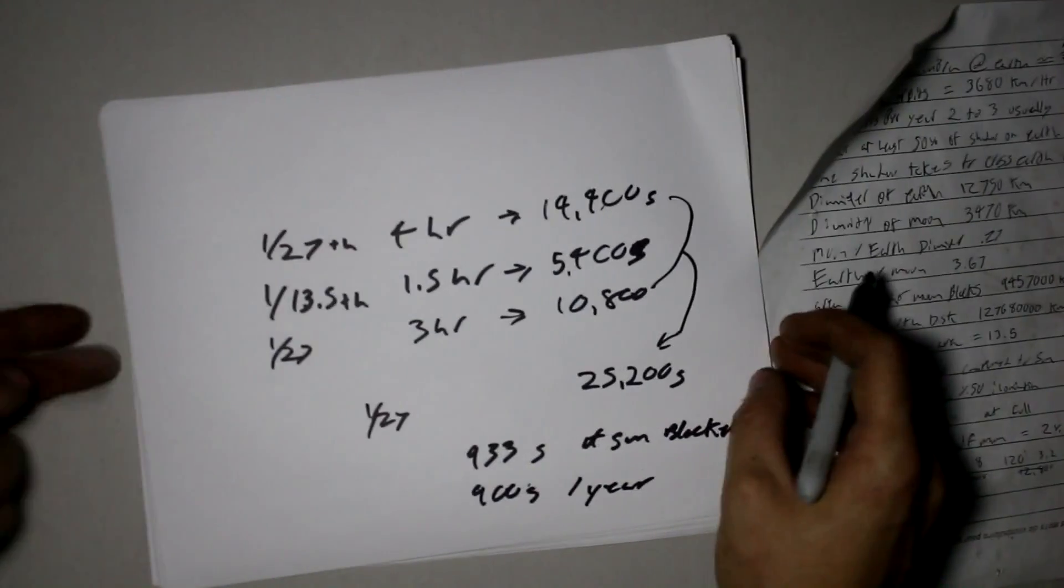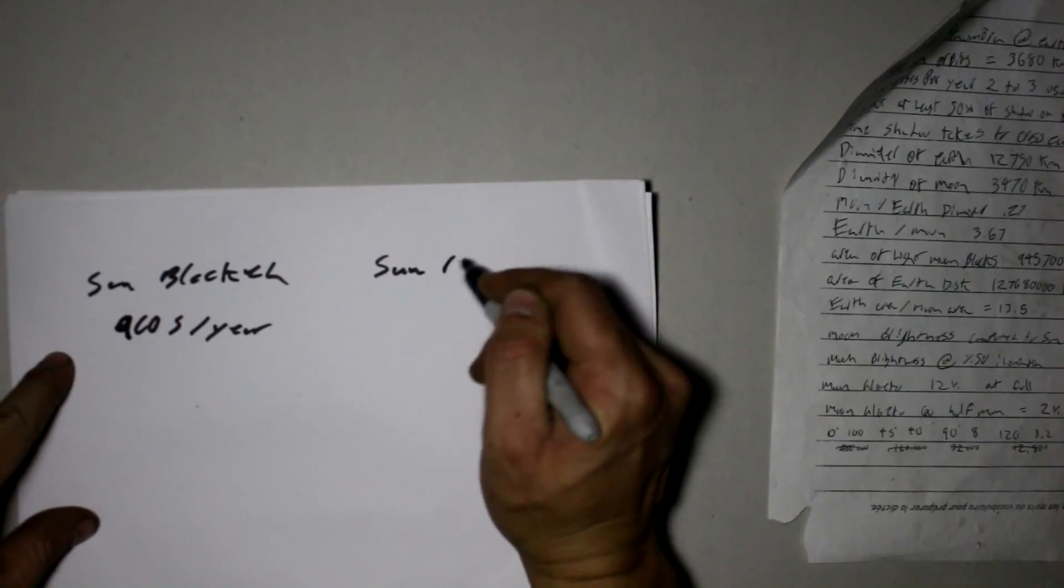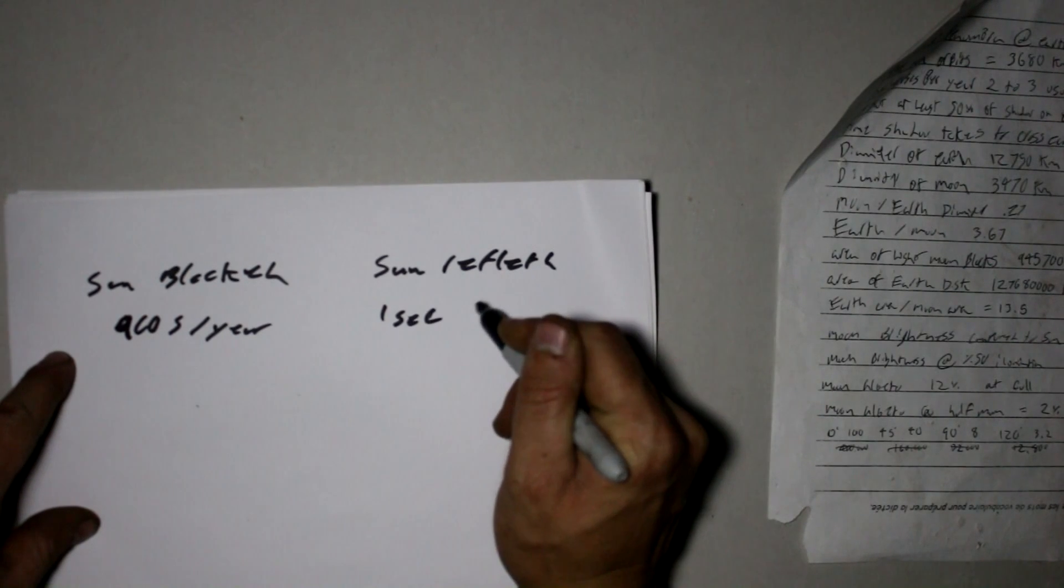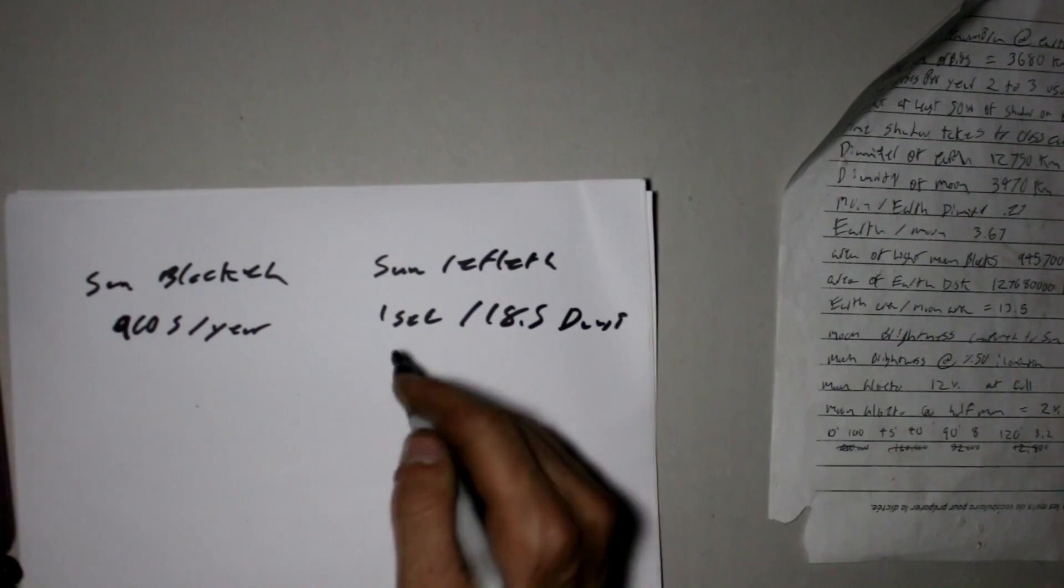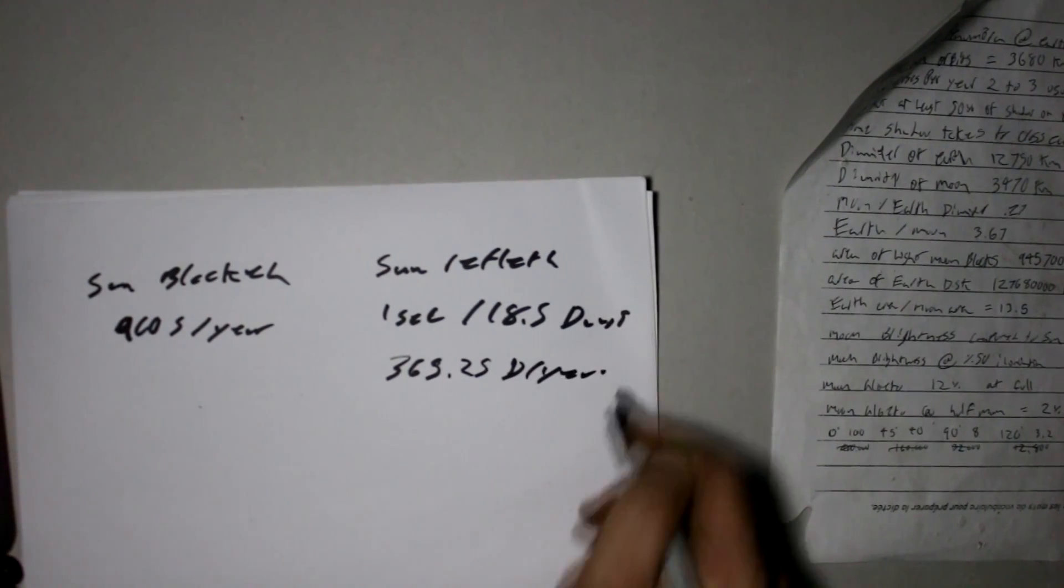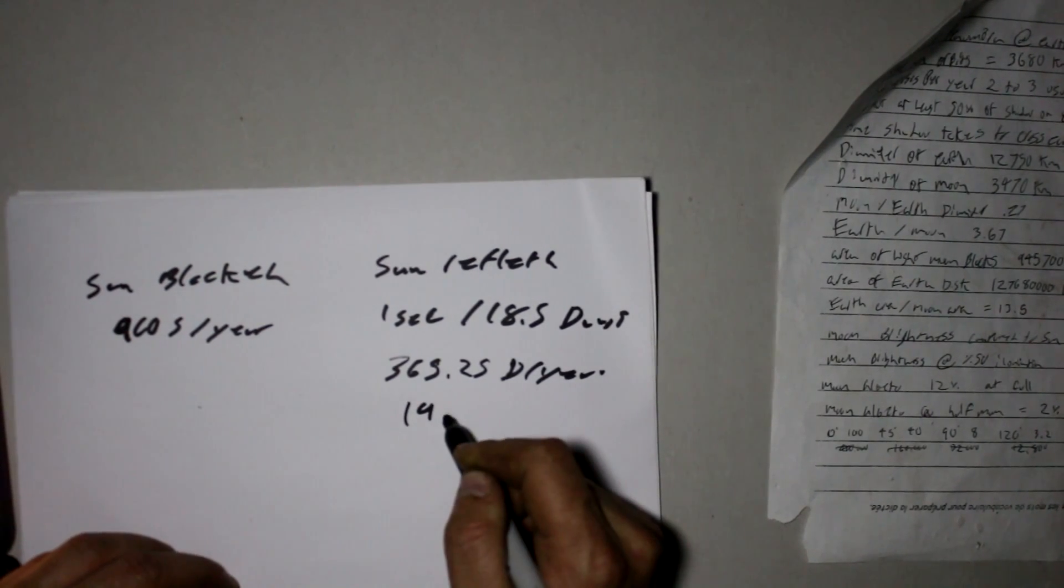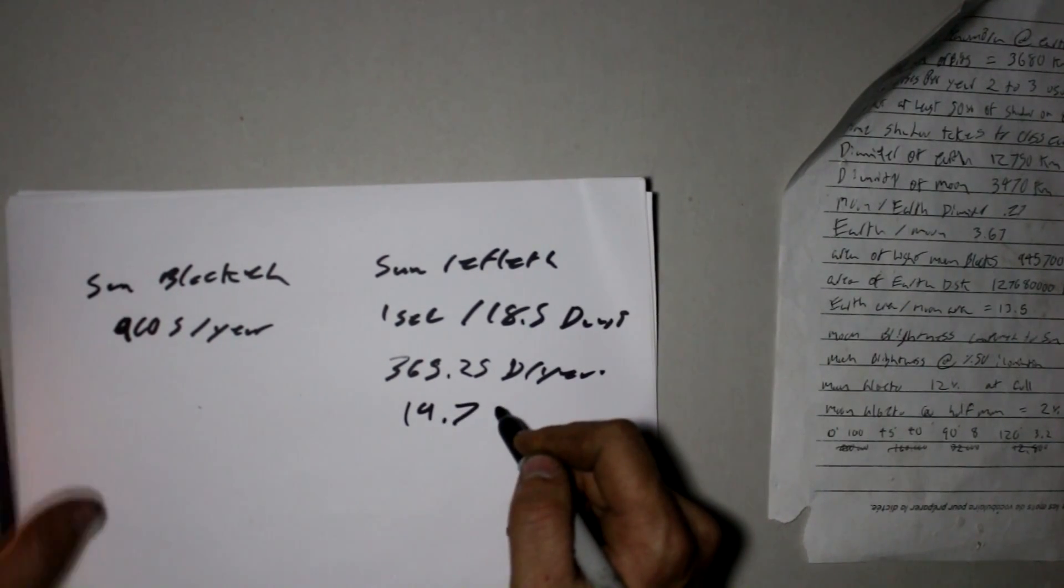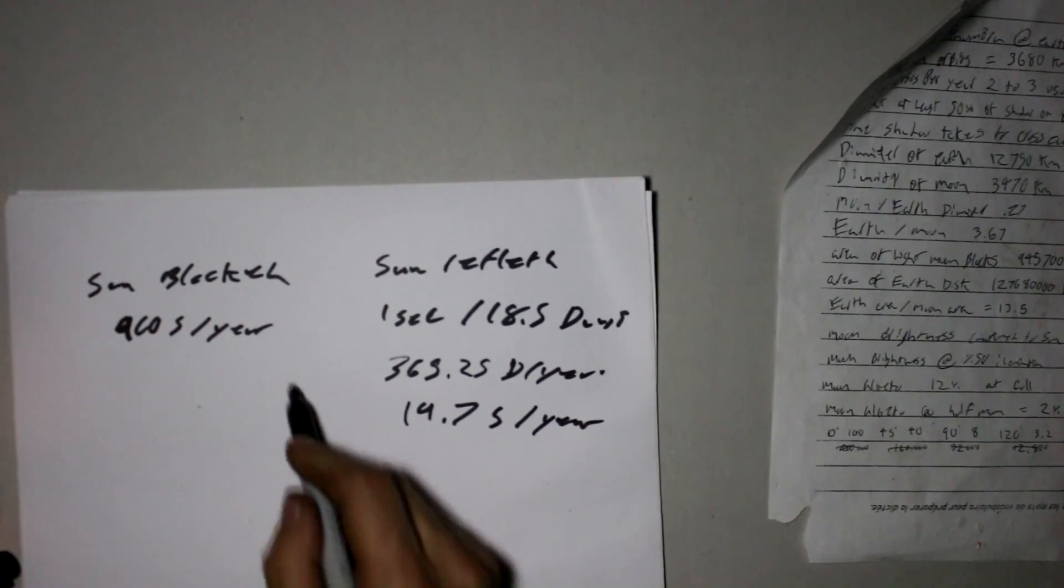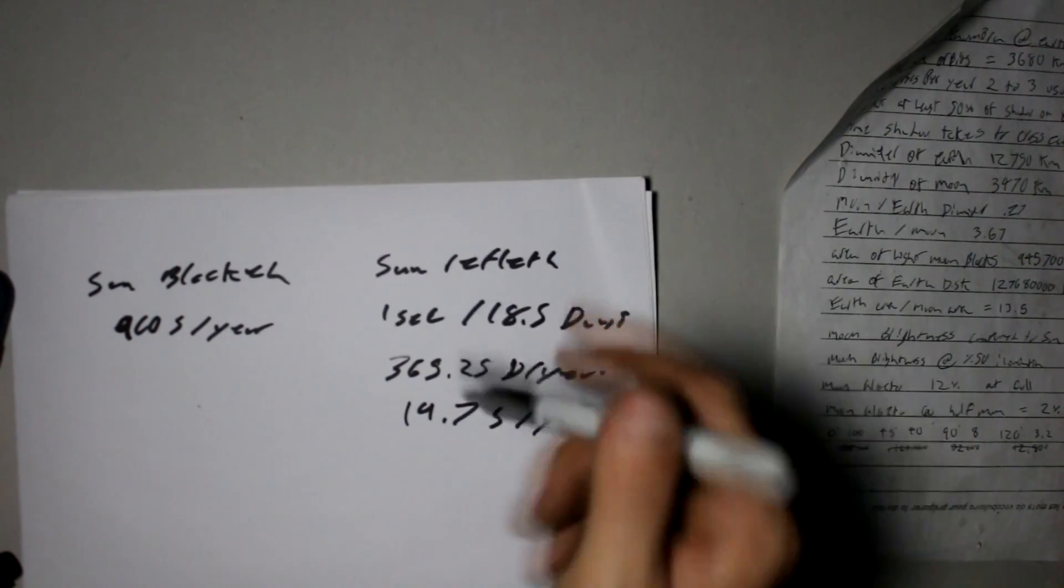Now how many seconds did we figure the moon put out, reflected back to us sun reflected? So that was one second per 18.5 days, so that's 365.25 days per year. Divide that by 18.5 gives us 19.7 and some change seconds per year. So it does block more, and I'd say an order of magnitude more sunlight is blocked by the moon than is received by it, closer to two orders of magnitude even.